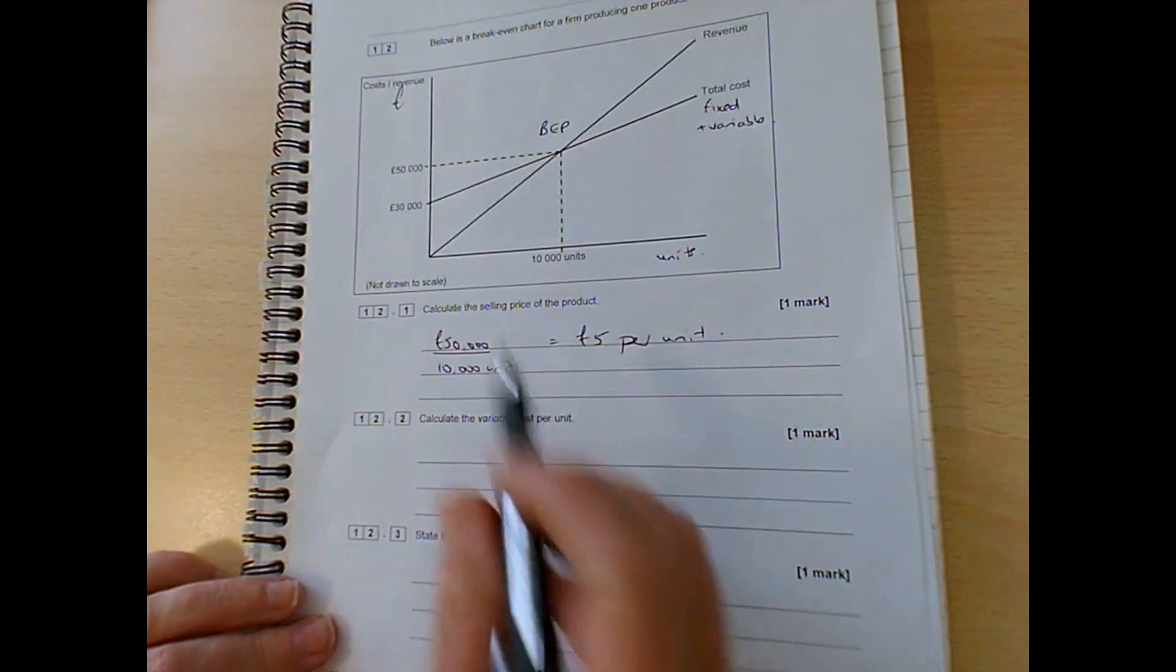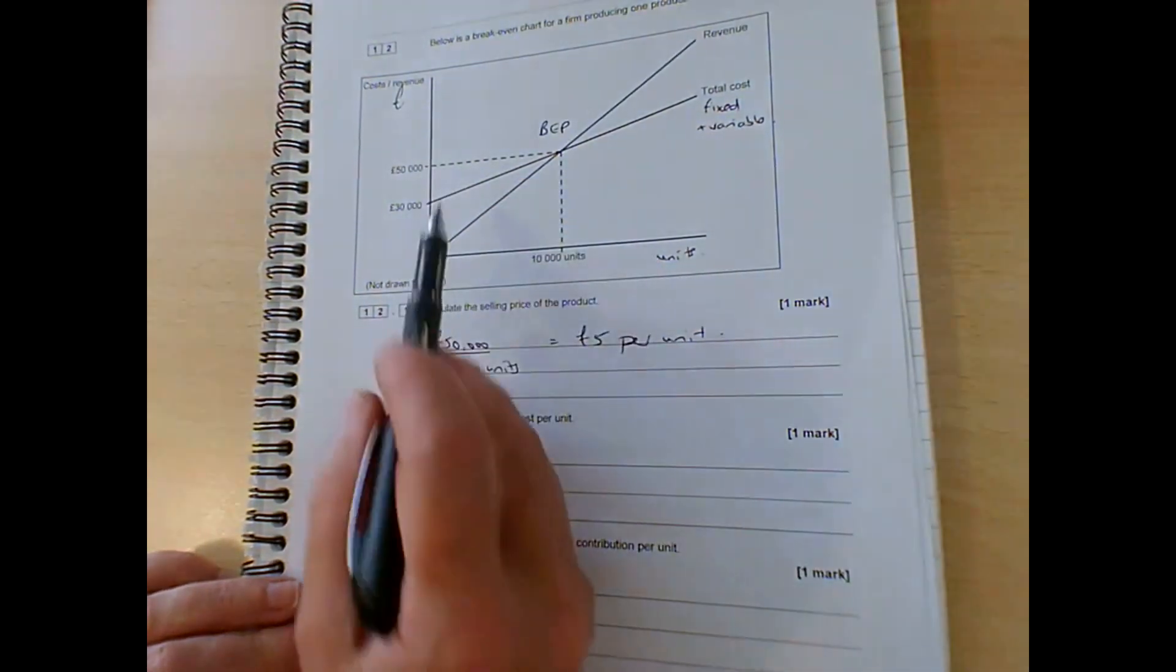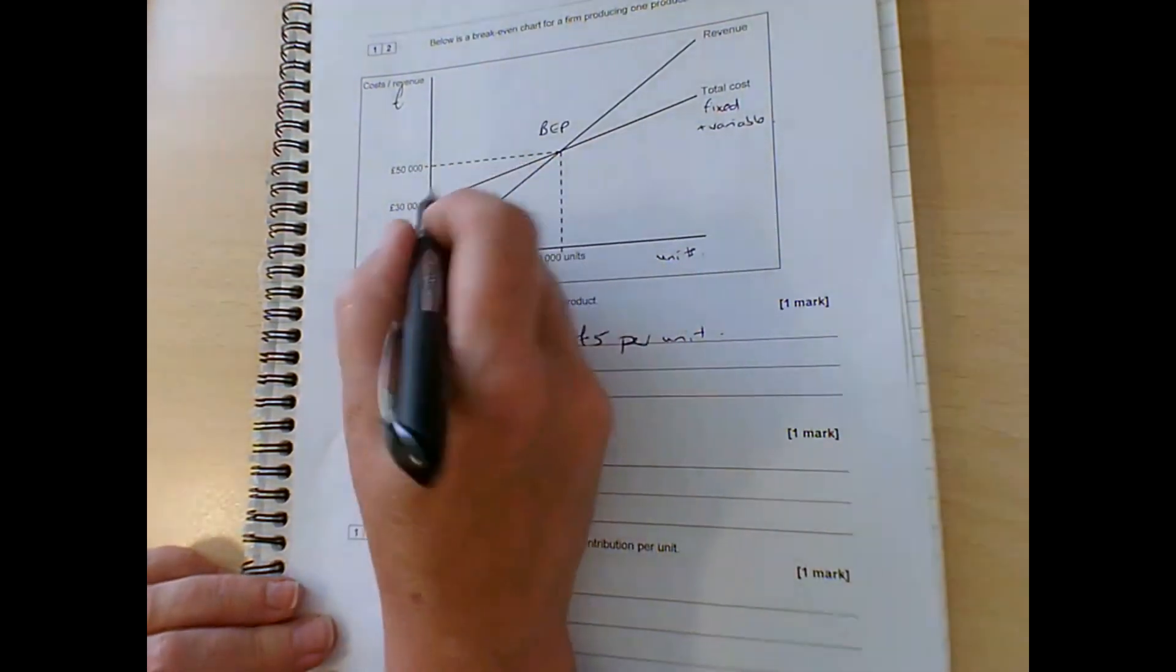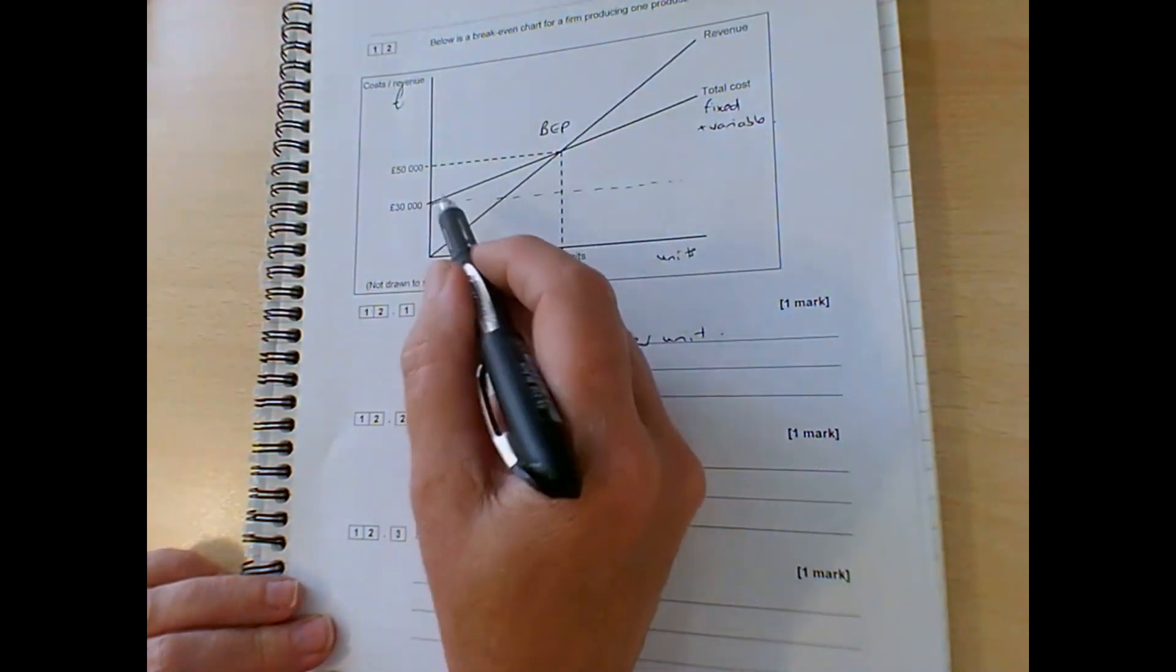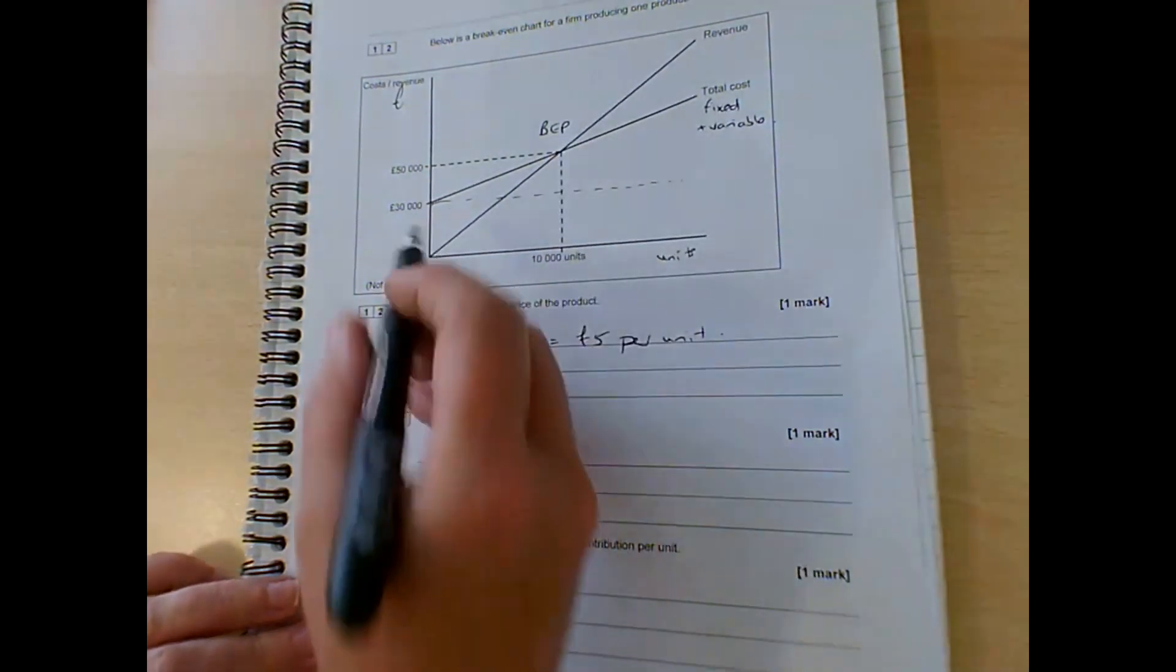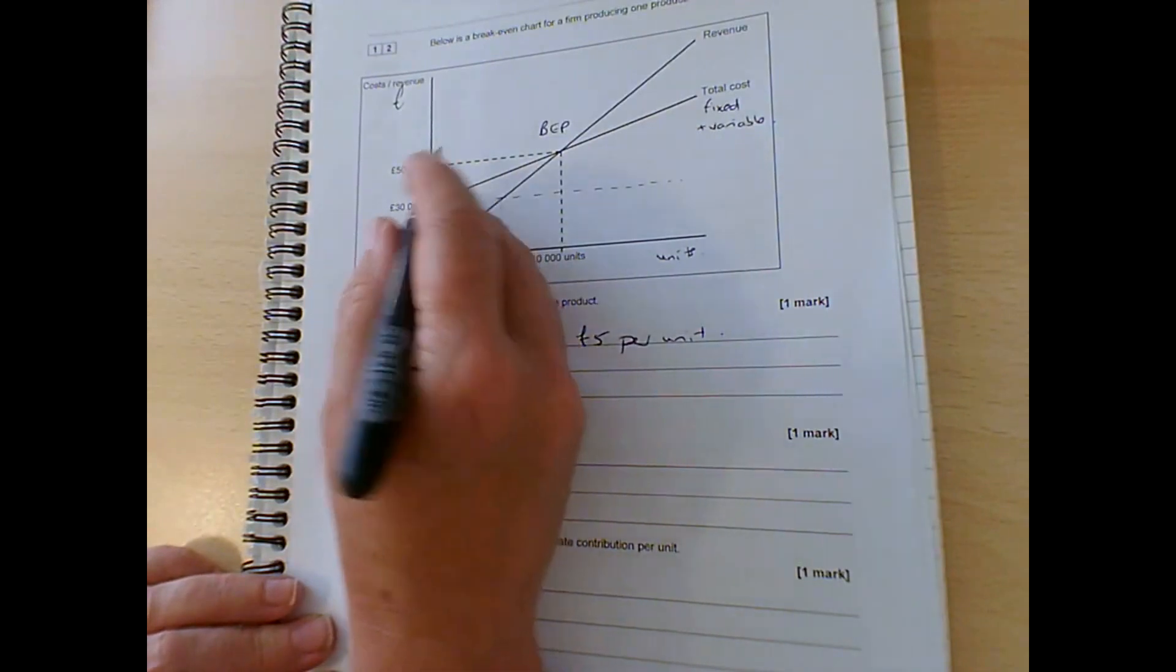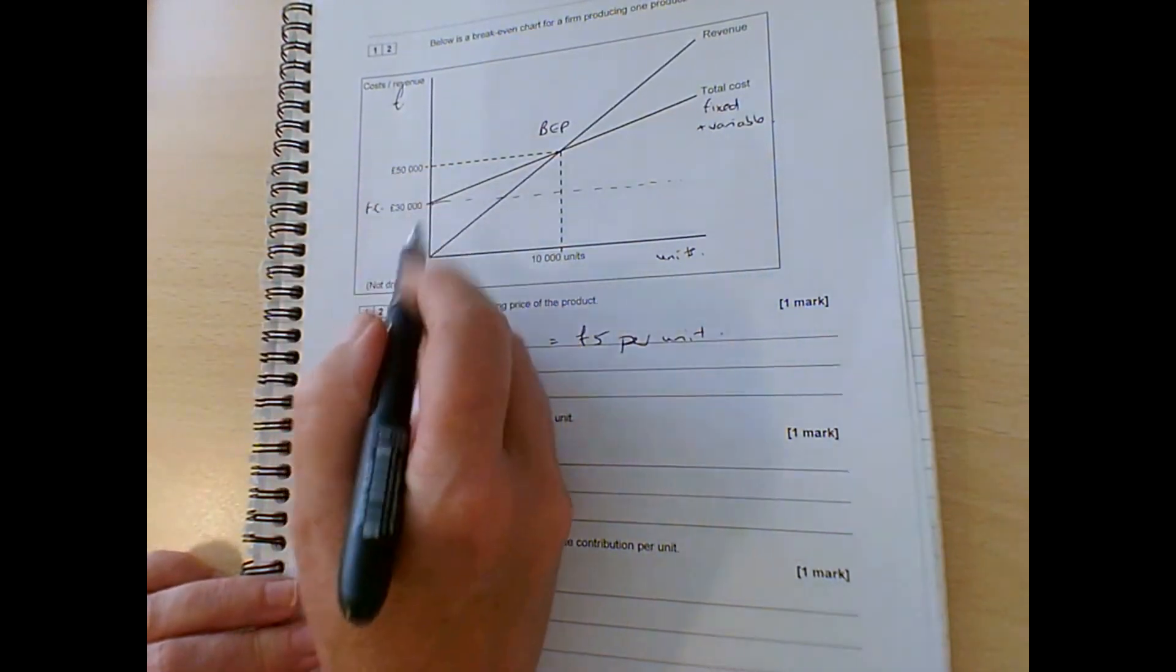And if we want to calculate the variable costs, we need to look and see how these costs behave. Now remember that fixed costs go along in a straight line like this. They don't rise in line with output, whereas your variable costs do. So at this point, fixed costs have to be this £30,000.